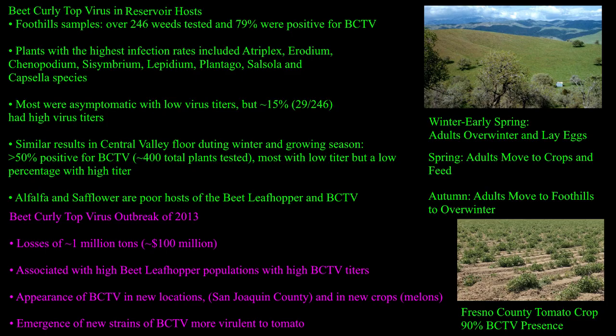The first one I'm going to talk about is beet curly top virus, which is one of those sort of new ones. Beet curly top virus was confirmed in cannabis in 2019, however it's been suspected in Colorado since about 2015. The beet curly top virus is vectored by a beet leafhopper in the Circulifer genus. The beet curly top virus itself can infect approximately 300 crop and non-crop plants, which means that it can infest plants that are not cannabis.